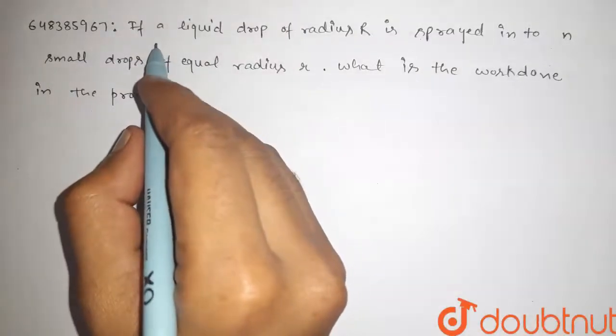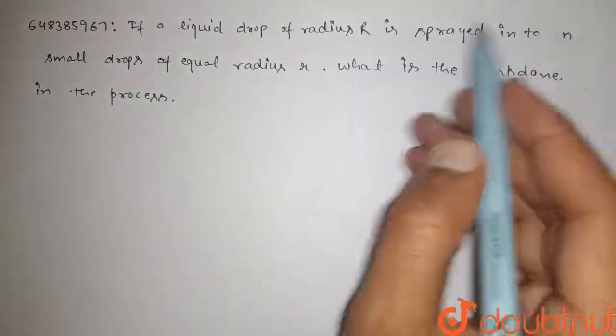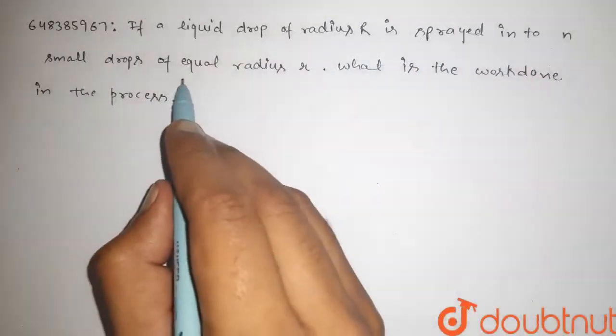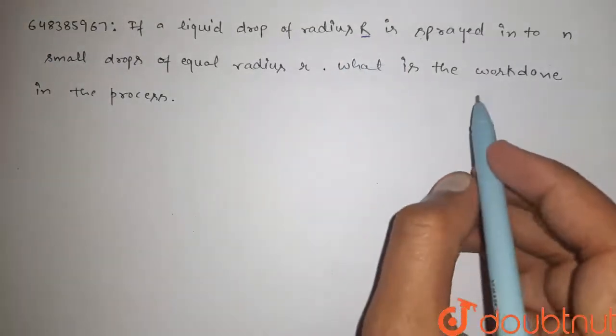Hi guys, here is the question. If a liquid drop of radius R is spread into n small drops of equal radius r, what is the work done in this process?